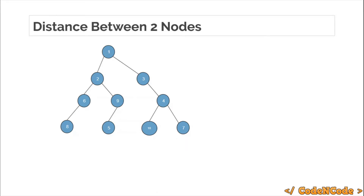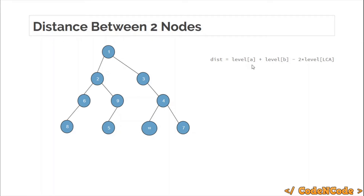So suppose you are given a tree and Q queries, each query of type A B where A and B are nodes of the tree and you have to tell the minimum distance between these two nodes. The distance between six and nine is two because you have to traverse two edges to reach from six to nine. The distance between six and three is three because you have to traverse three edges. The actual formula, if you observe, is: level of A plus level of B minus two times level of LCA.